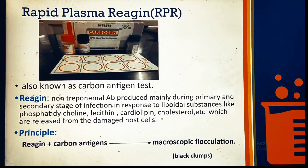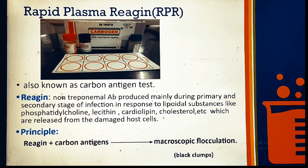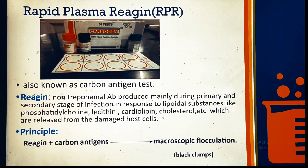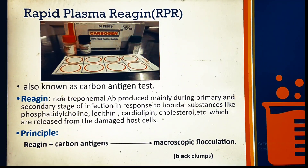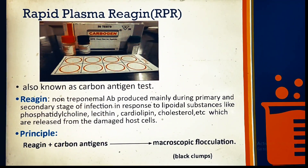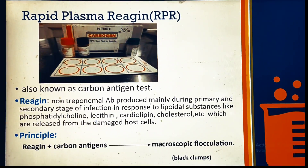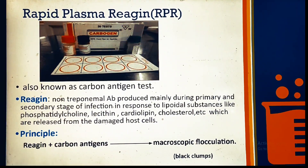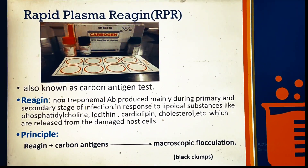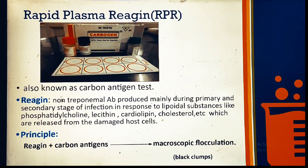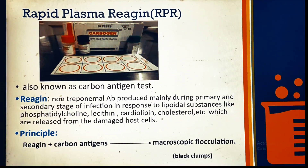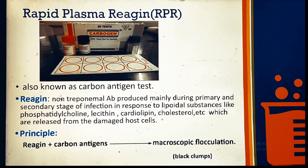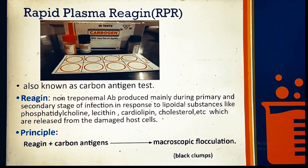Reagin is a non-treponemal antibody produced mainly during the primary and secondary stages of infection in response to lipoidal substances like phosphatidylcholine, lecithin, cardiolipin, and cholesterol, which are released from the damaged host cells.